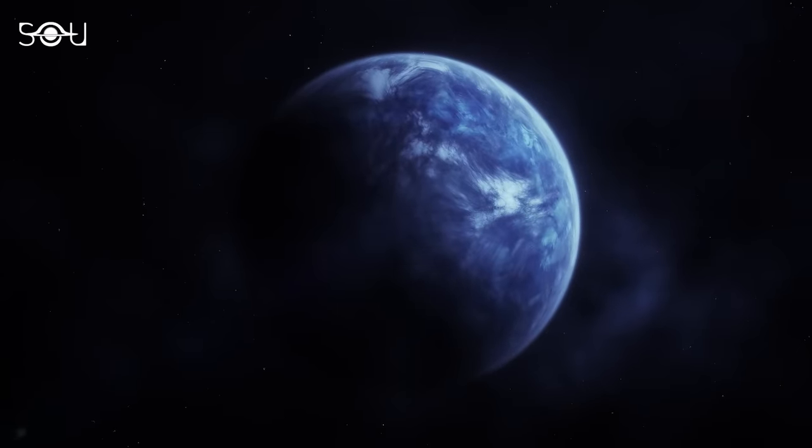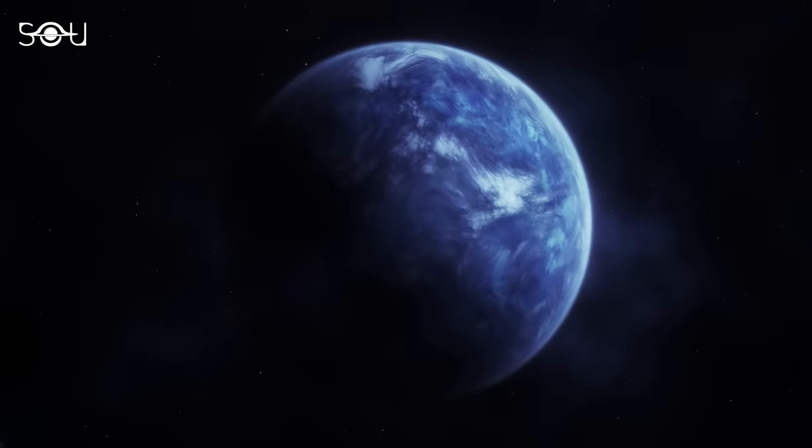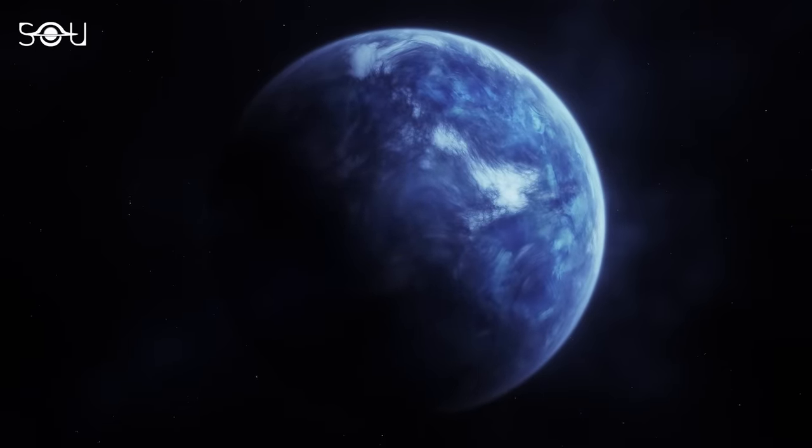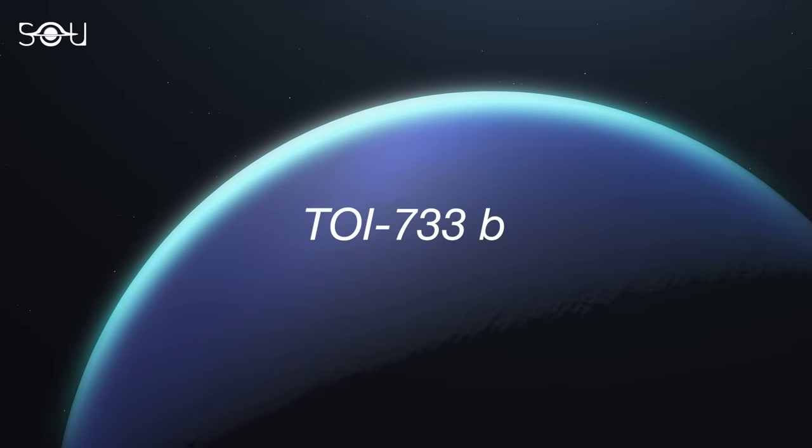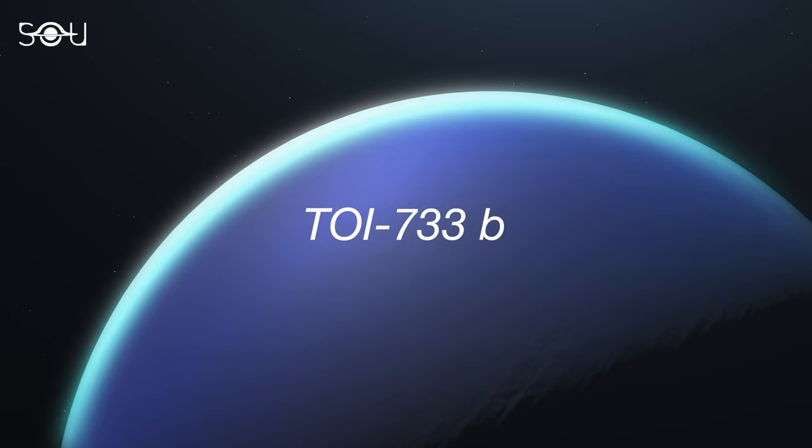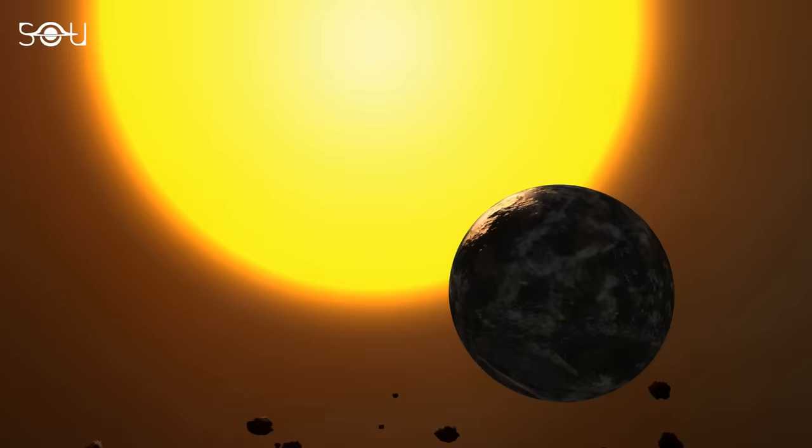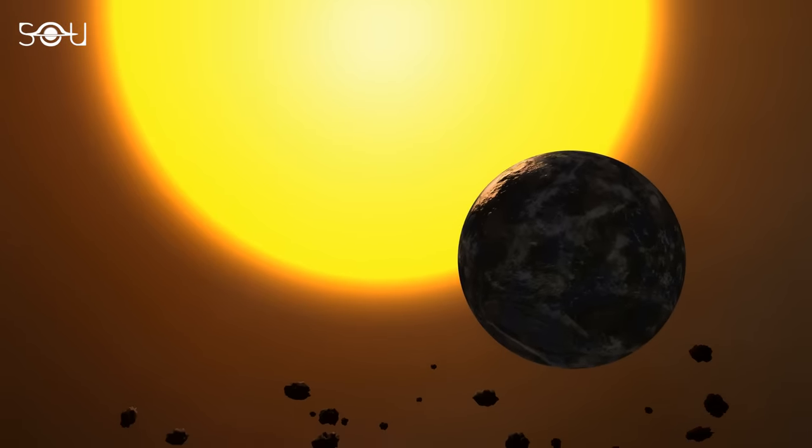Astronomers have discovered a rare planet twice the size of Earth that may be entirely covered by an ocean. Adding to the excitement, this planet, known as TOI 733b, orbits a star slightly smaller than the Sun in a remarkably short period of just 4.9 days.